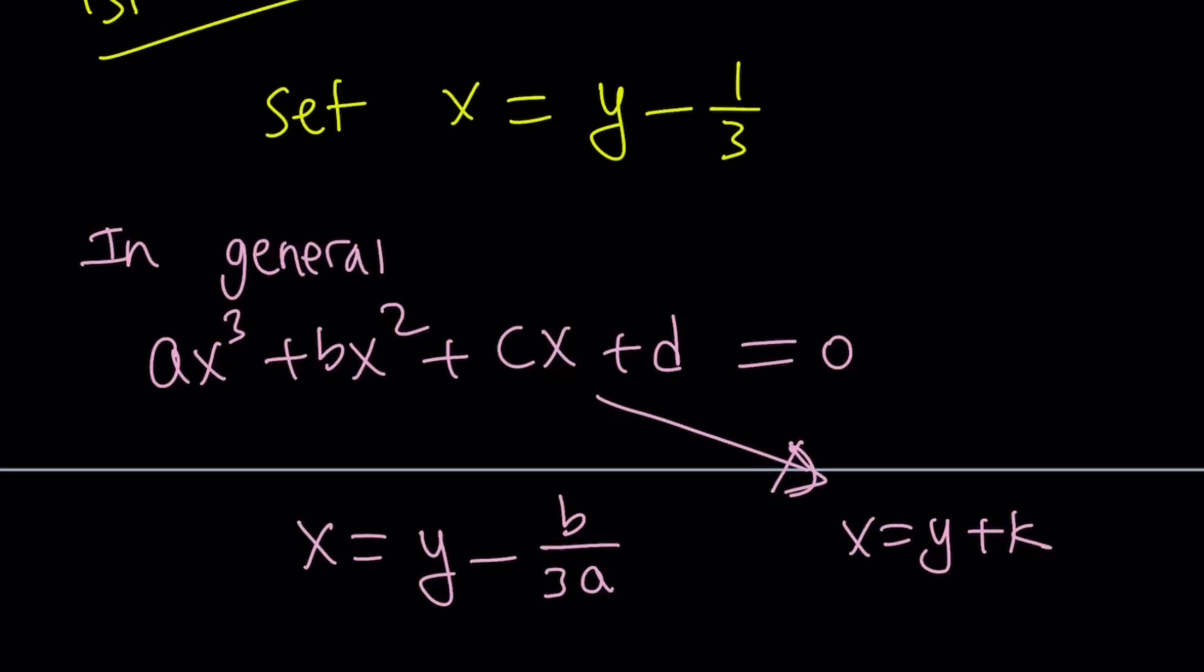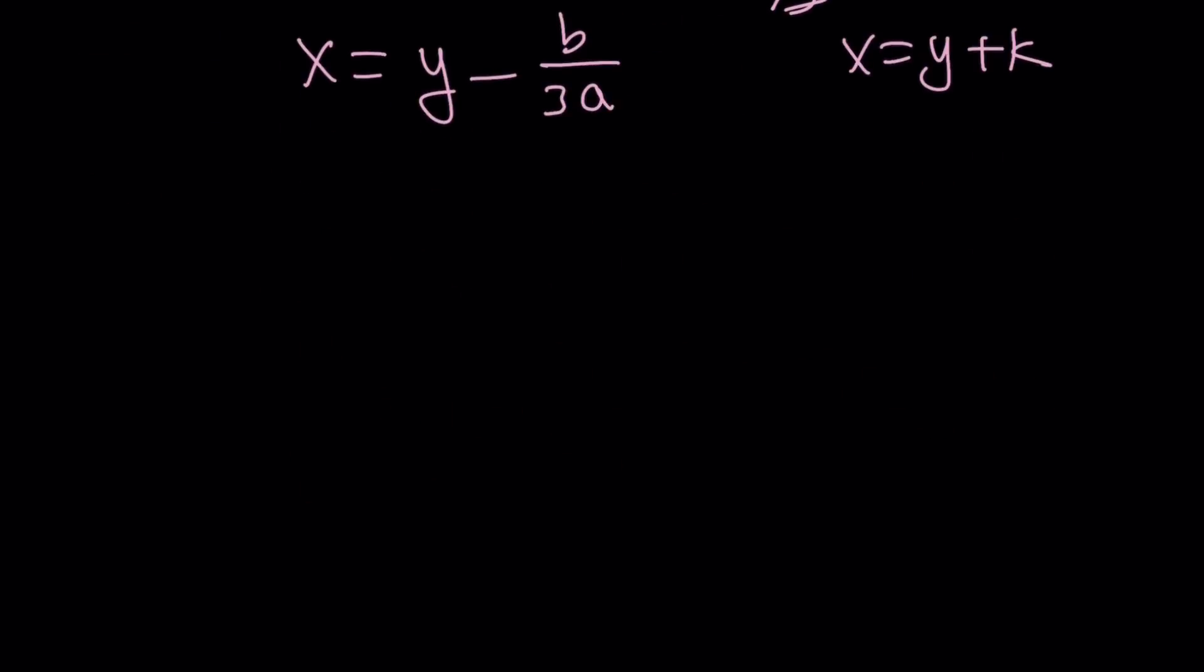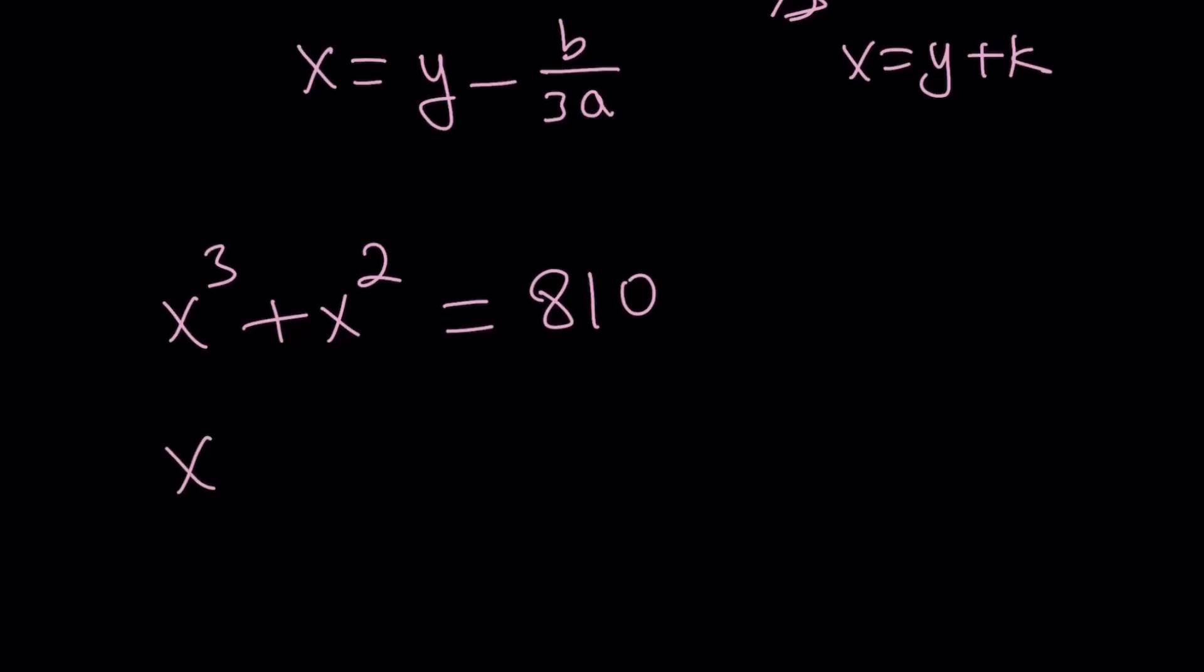Make sense? In this case, our a value is 1 and b is 1, they're both 1, so that's why we have to do this substitution. Let's rewrite the problem: x cubed plus x squared equals 810, and let's replace x with y minus 1 third. This will get rid of the quadratic term. That's the first step.